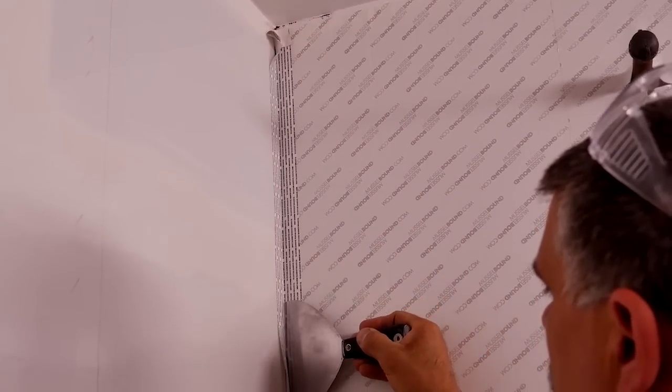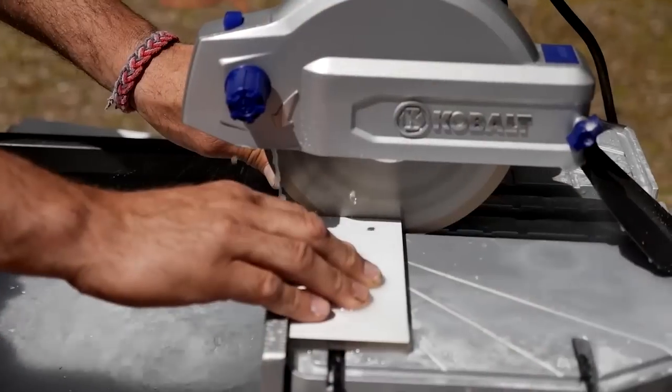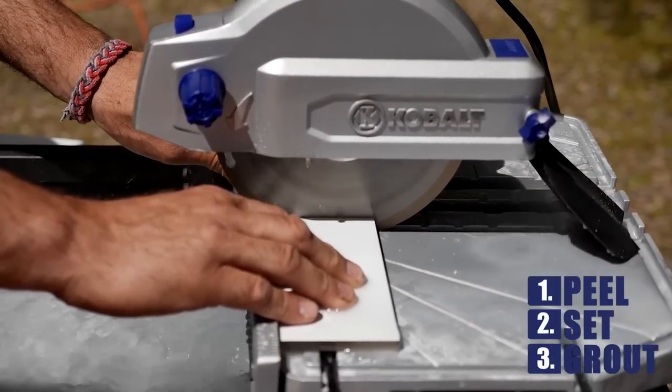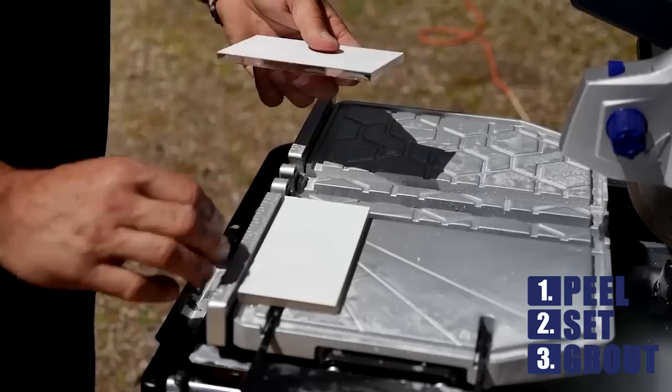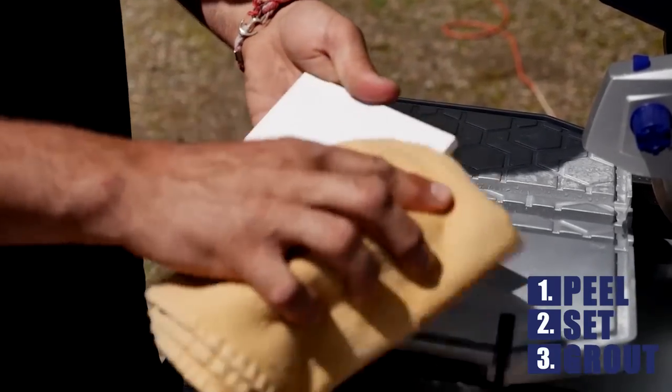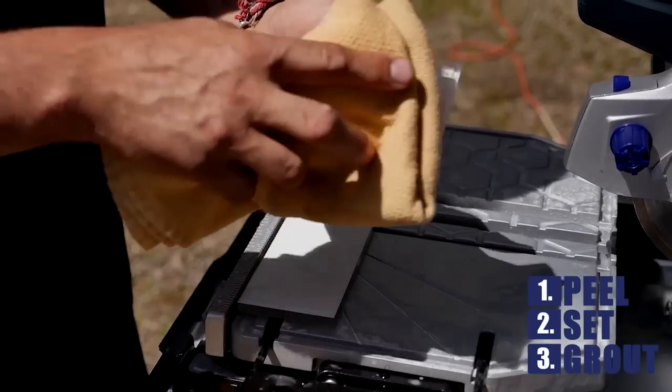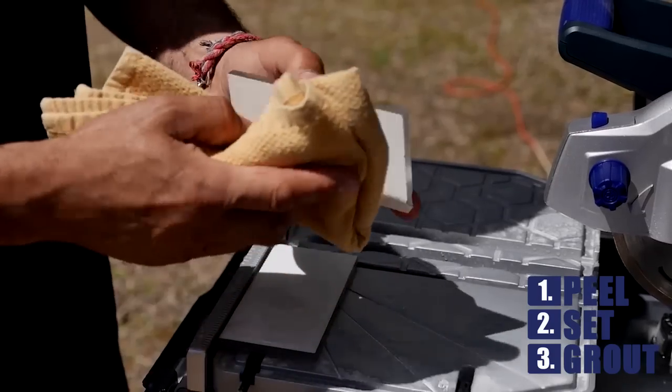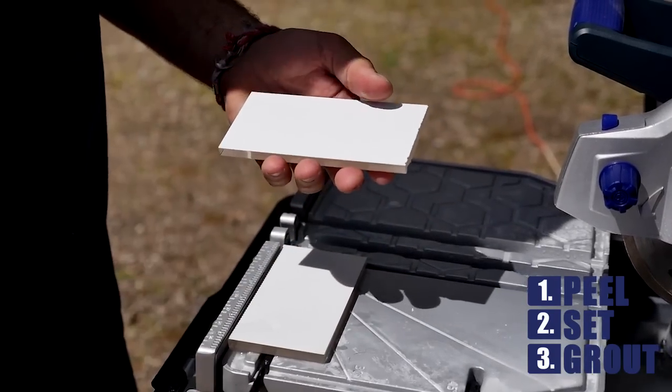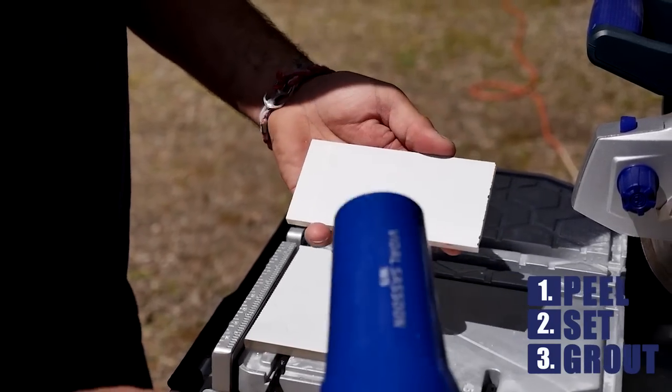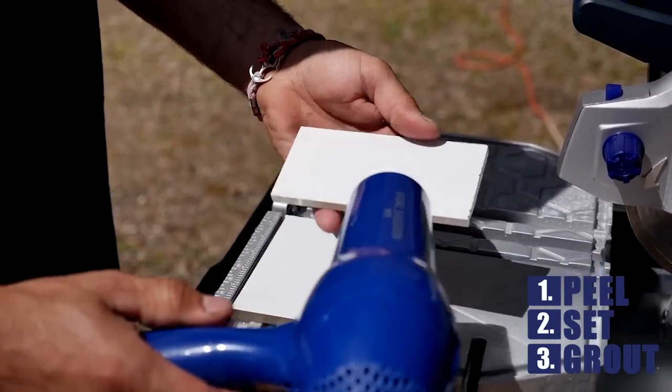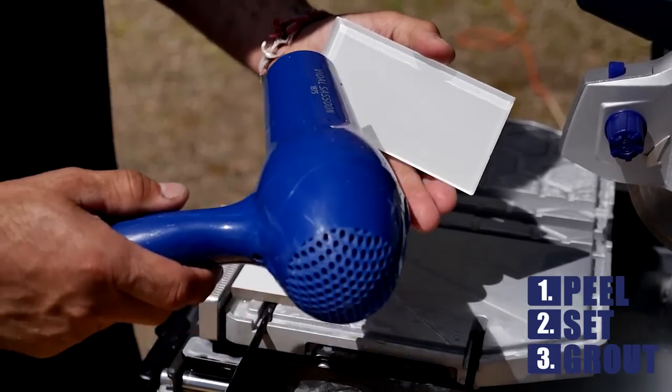Repeat this process as you work toward the bottom of the corner. Make certain after cutting tiles to size with a wet saw that you dry them thoroughly before applying them to Musclebound. We recommend, in addition to wiping the tiles, you also use a hair dryer to assure they are completely free of any surface or absorbed moisture.